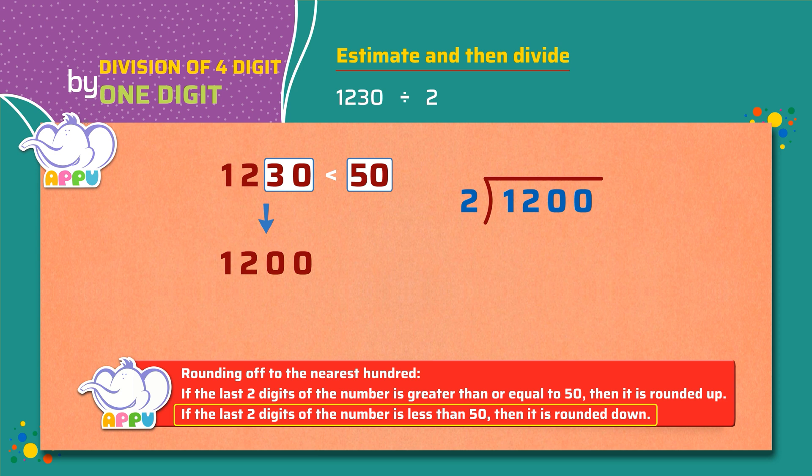Step 1. We cannot divide 1 by 2 since 1 is smaller than 2. So we consider the hundreds digit as well. We figured out how many twos does it take to make 12 which is 6.